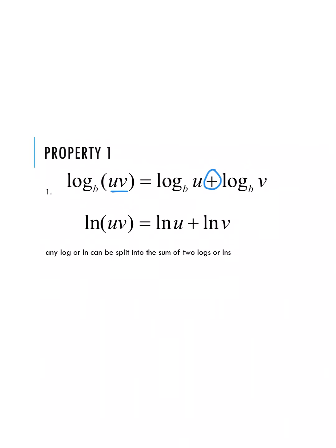To recap: we were multiplying our expression u times v and we split it up as u plus v. So any log or natural log can be split into the sum of two logs or natural logs. Let's look at some examples to explore this property further.